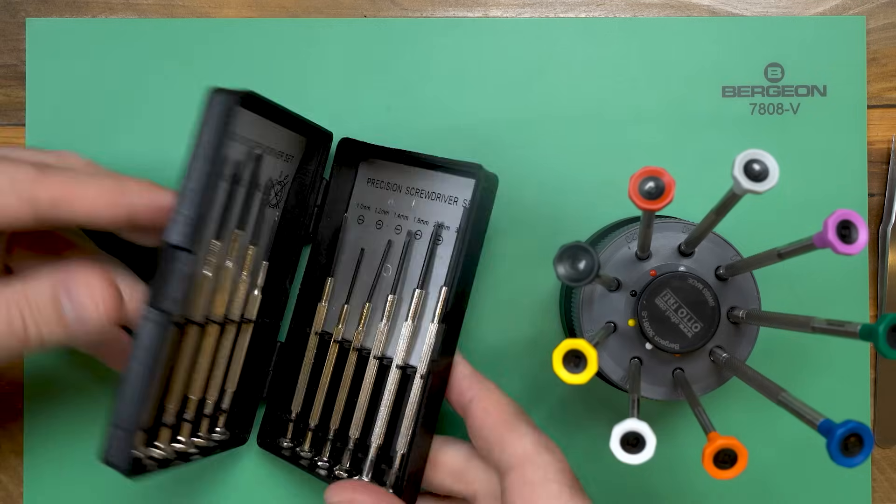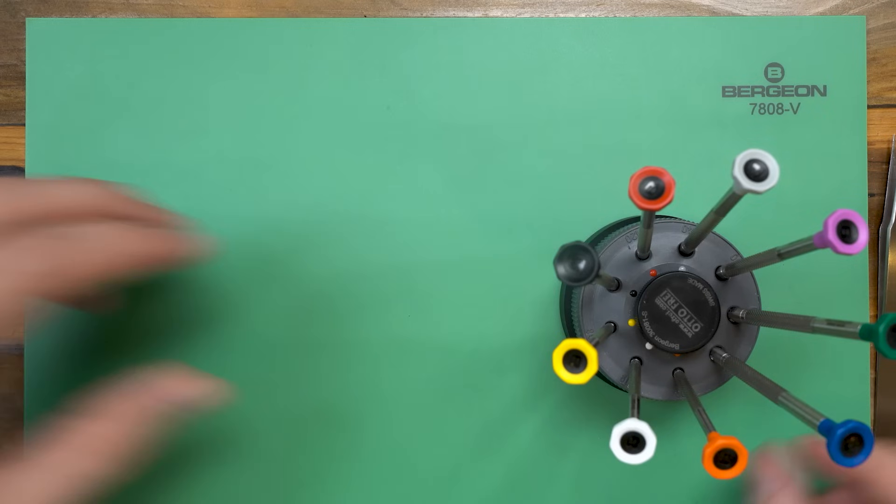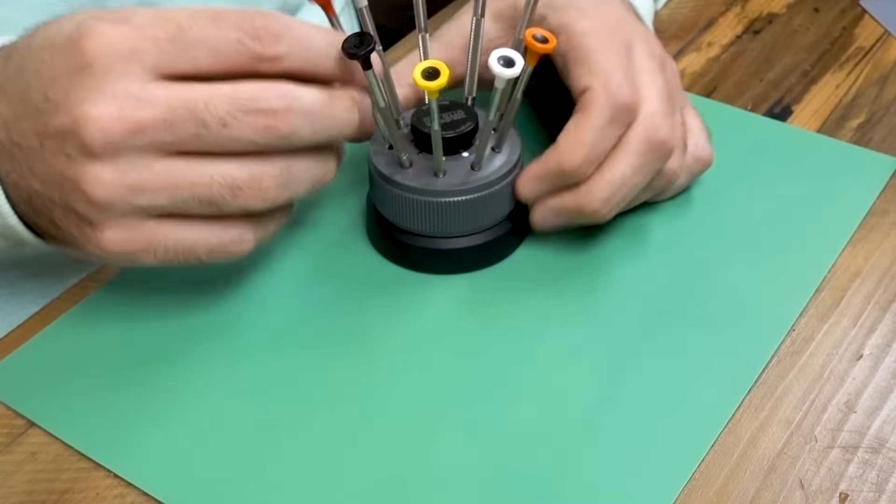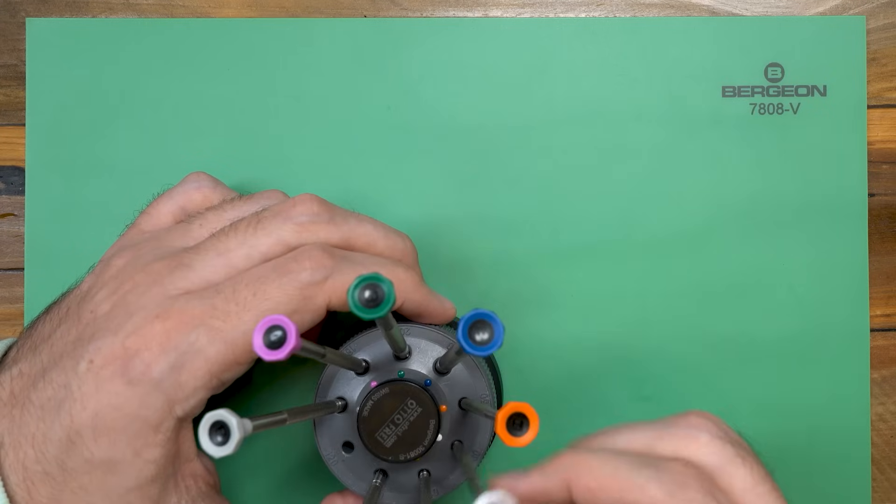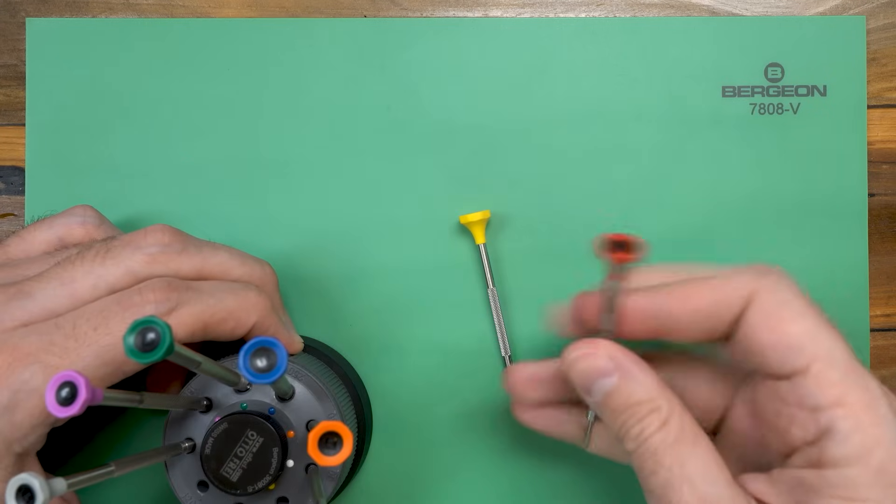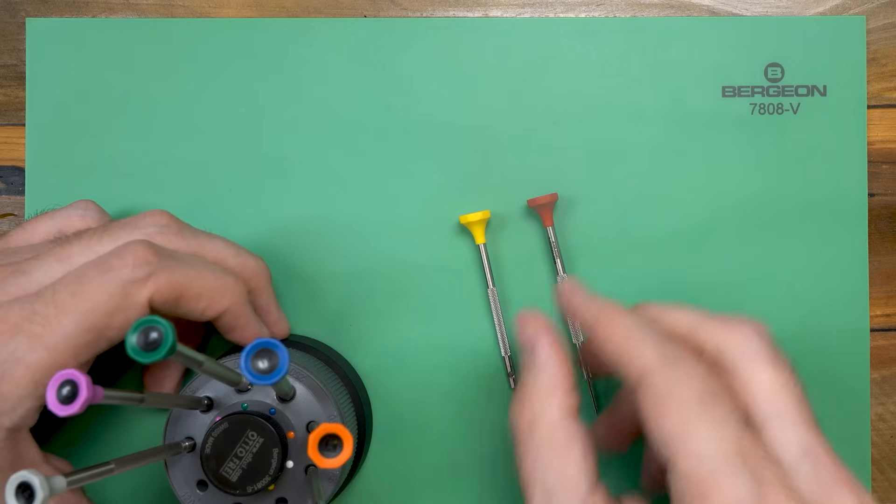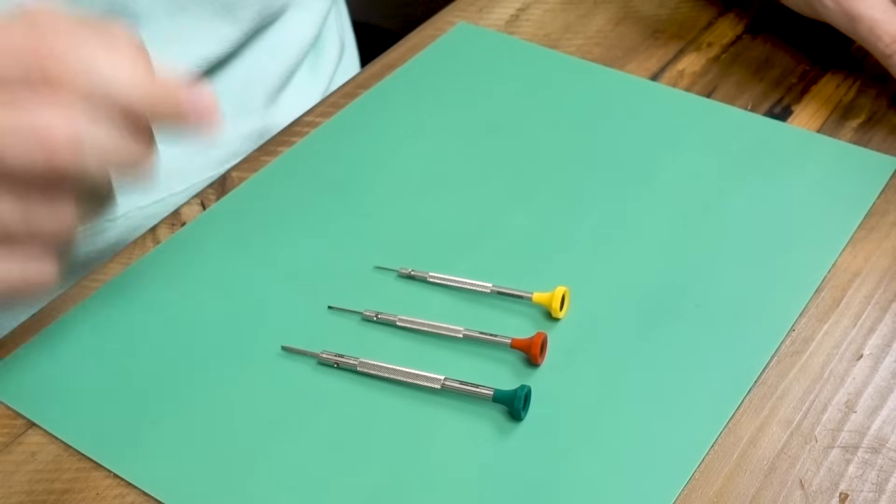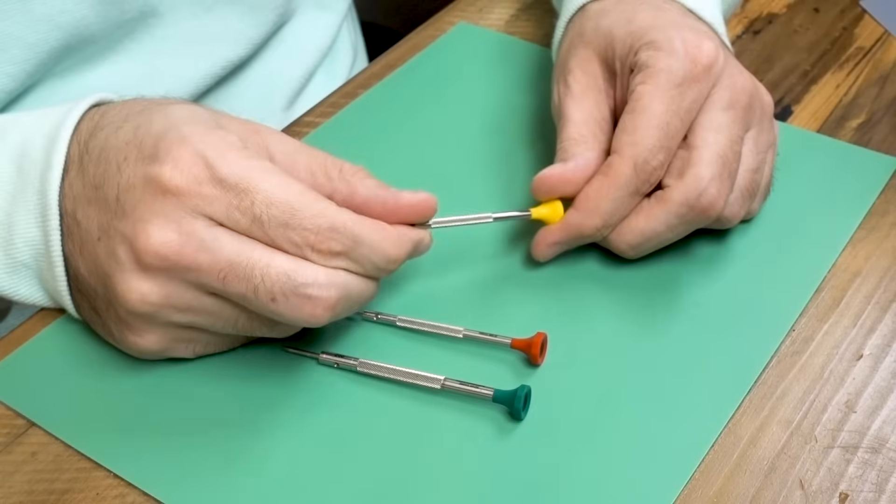But if you want to try things out with the nicer screwdrivers but don't want to spring for the full set, you could probably get away with three screwdrivers. Think small, medium, and large. The small one about 0.8 millimeters, the medium 1.2 millimeters, and the large 2 millimeters, which should cost about twelve dollars each.